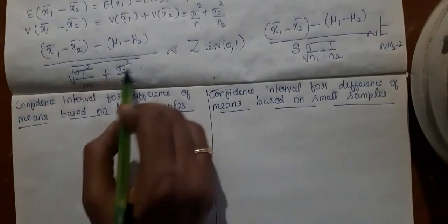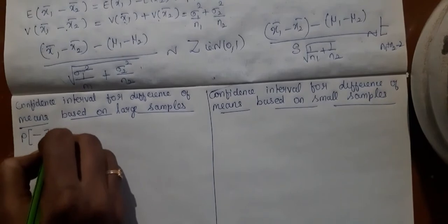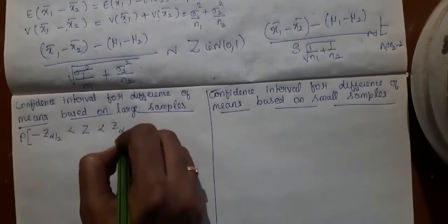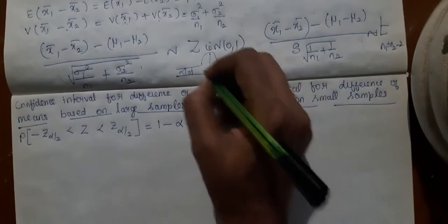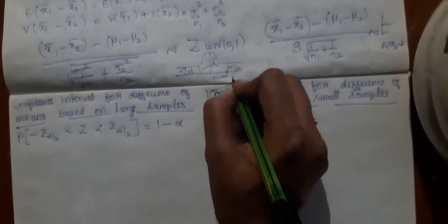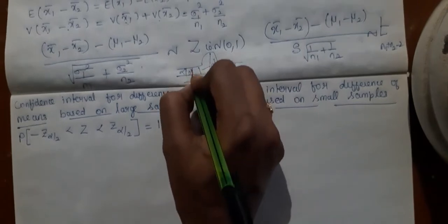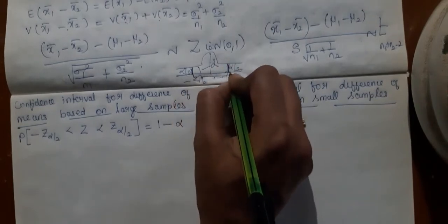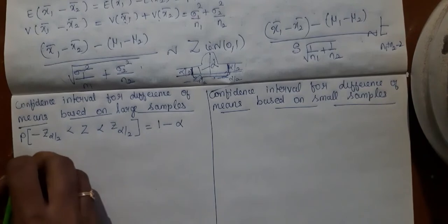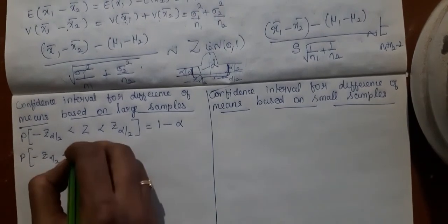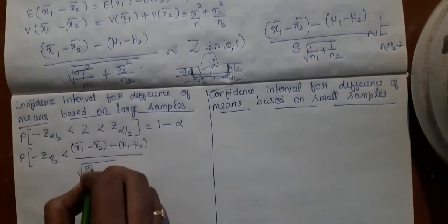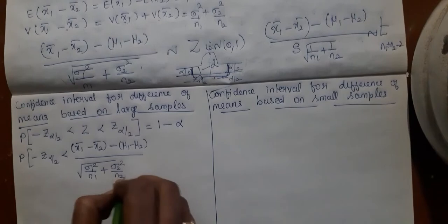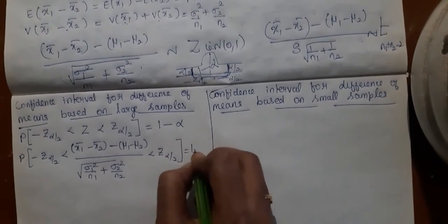Since the statistic follows the Z distribution, and the standard normal distribution is symmetric, the probability of minus z_α/2 to plus z_α/2 is 1 minus alpha. The area alpha/2 is on each tail, and the remaining area is 1 minus alpha. So the probability that your Z lies between these two values is 1 minus alpha. Therefore, probability of minus z_α/2 less than (x̄₁ minus x̄₂ minus (mu1 minus mu2)) divided by square root of sigma1²/n1 plus sigma2²/n2 less than z_α/2, equals 1 minus alpha.